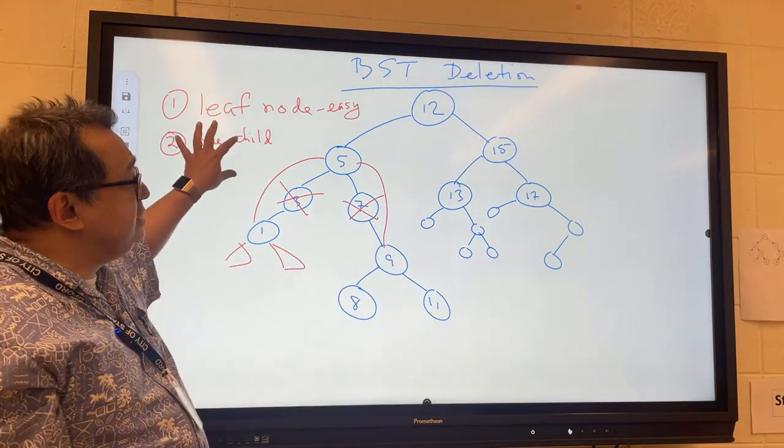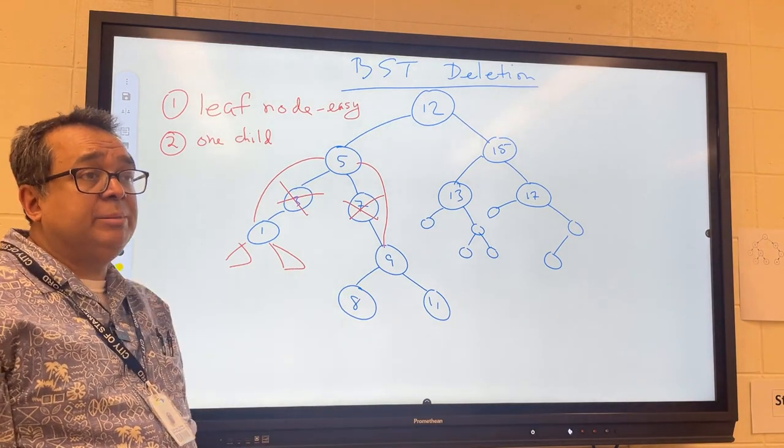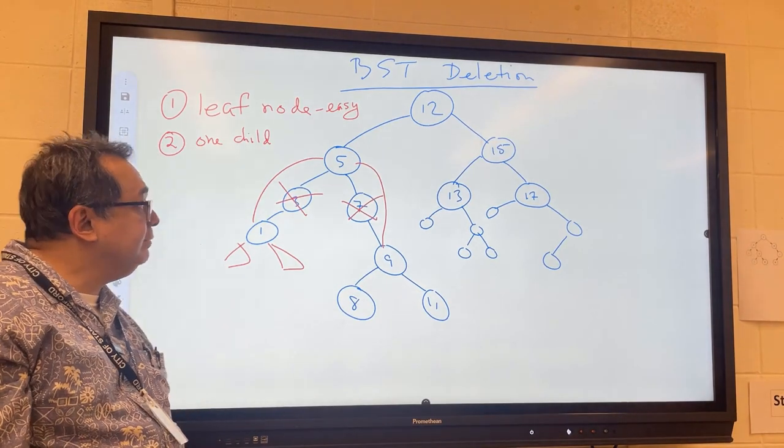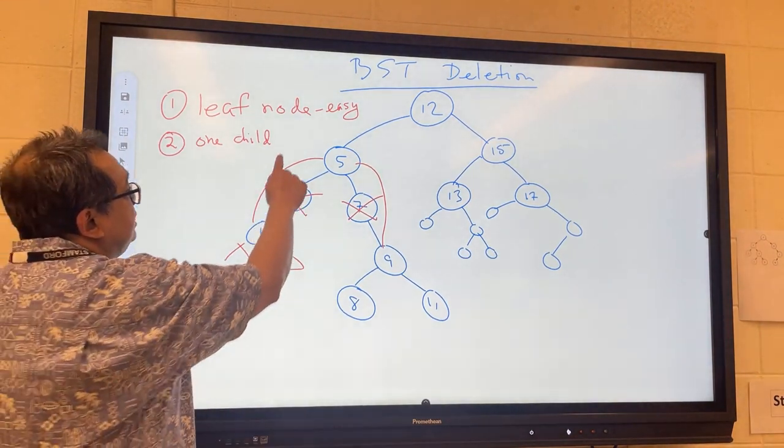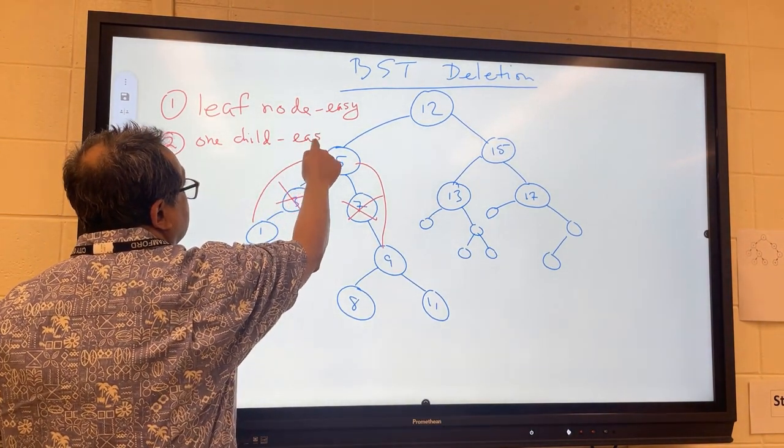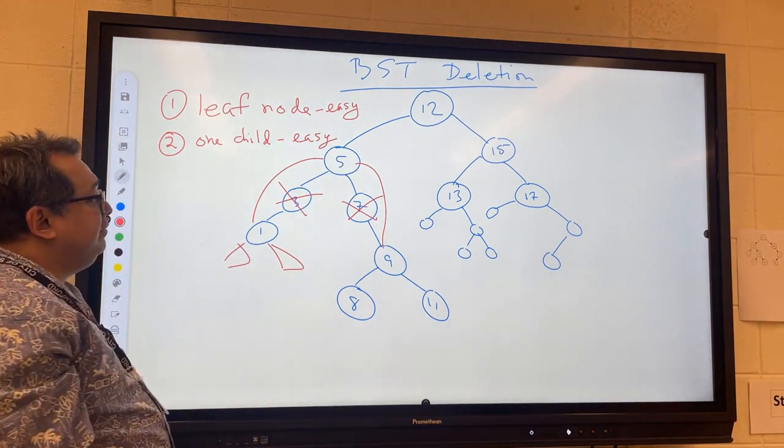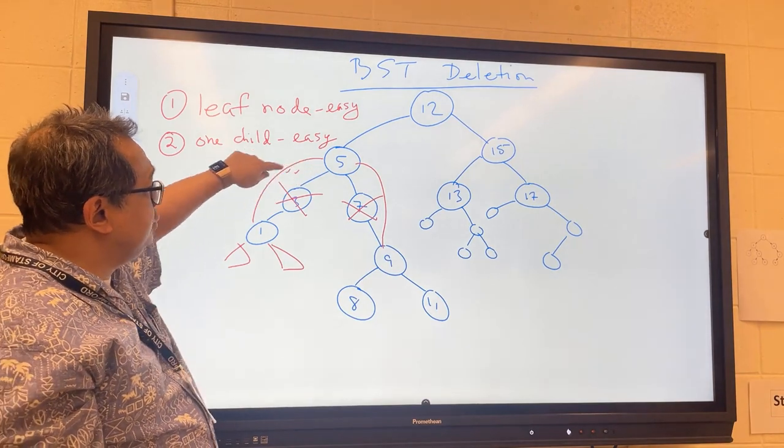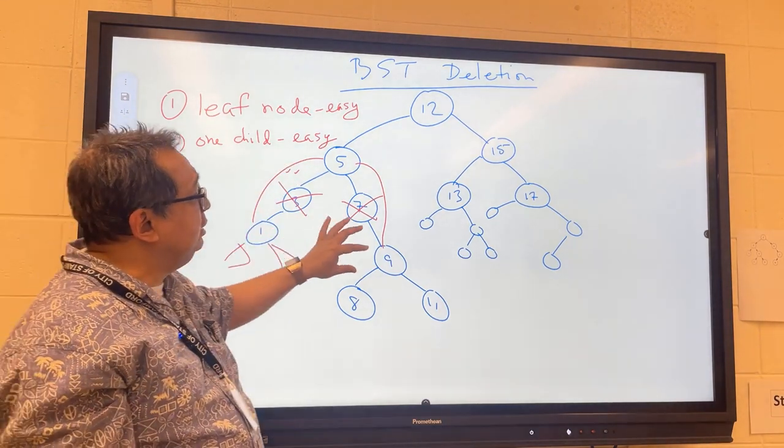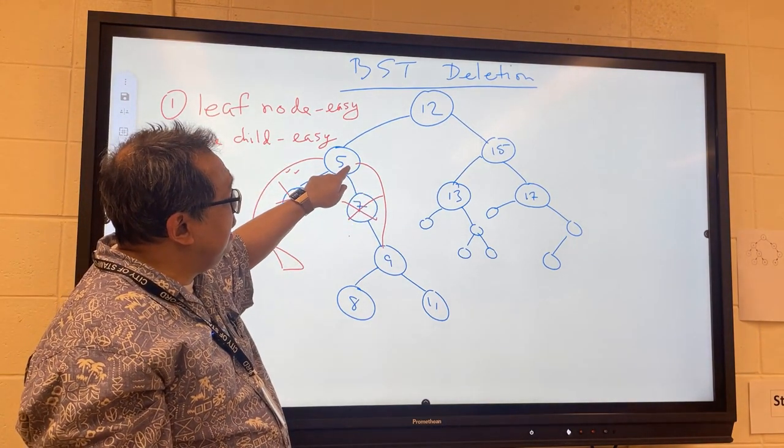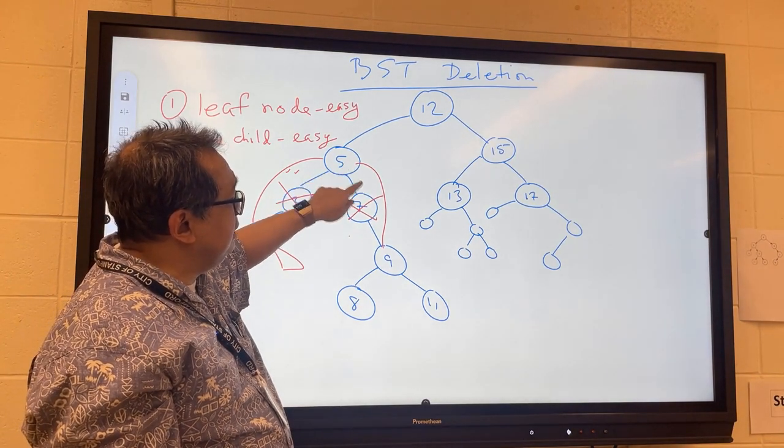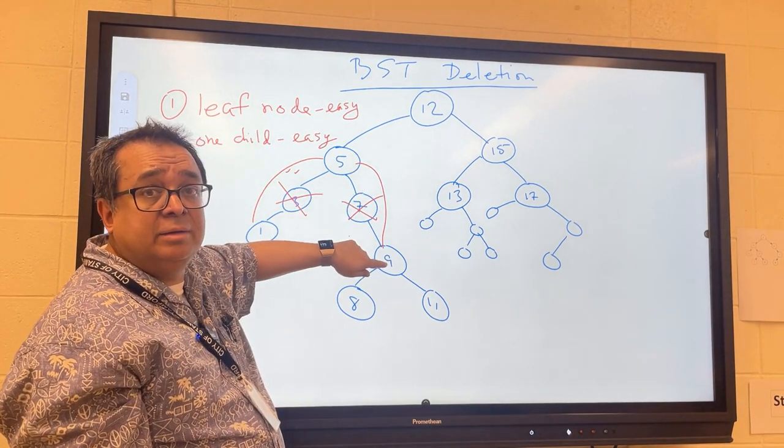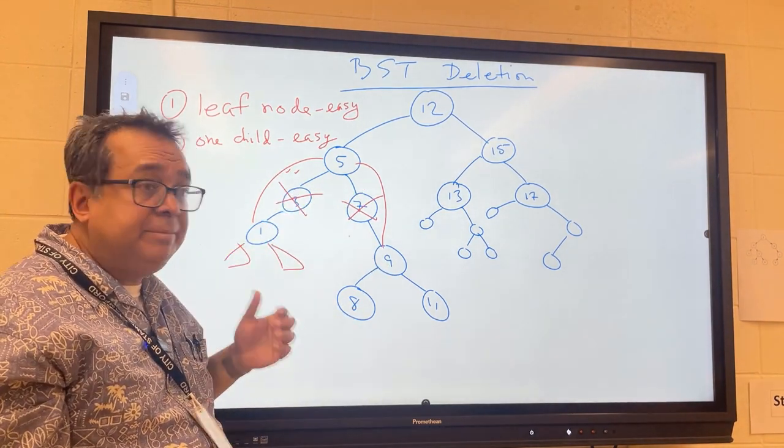I'm going to show you the delete process here after I discuss the third case, and you'll see it's a little bit more complicated for the third case. That's the one I'm going to focus on. We agree then that this is also easy. Where we would find if they had zero children, we just basically switch the connection. If it has one child, we delete the node and just connect the previous parent to the previous child. We agree those two are easy, right?